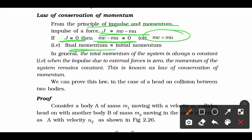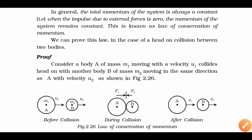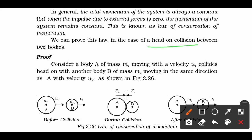इस वजह से हमारे पास एक quantity मिलेगी जिसे हम कहेंगे mv equals to mu, और इसे हम इस तरह कह सकते हैं कि final momentum जो होगा वो initial momentum के equal होगा। In general, total momentum of a system हमेशा constant होता है अगर हम external force को zero कर दें। इस law को ही हम conservation of momentum के नाम से जानते हैं।